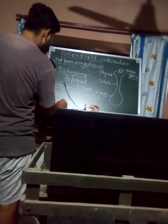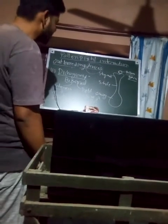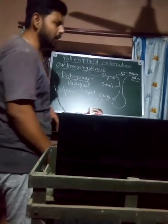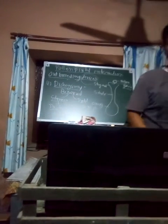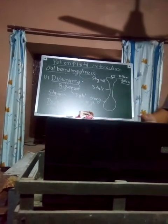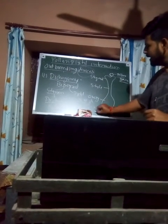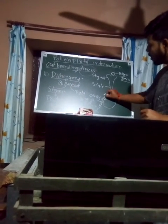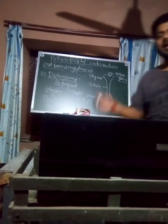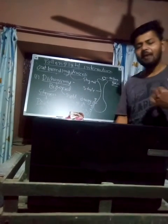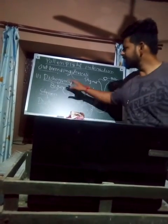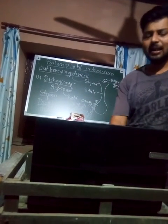Protandry is observed in maize. In maize, both male and female flowers are present on the same plant, but the male flowers mature first and female flowers mature later — so despite both reproductive organs being on the same plant, self-pollination does not occur. Protogyny is observed in Mirabilis, also commonly known as the 4 o'clock plant. In Mirabilis, the female flower matures first and the male flower matures later. Further outbreeding mechanisms will be discussed in the next video.